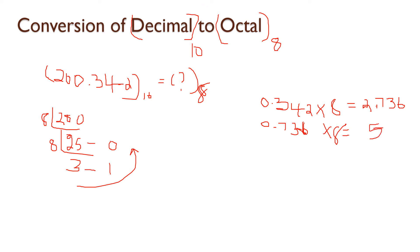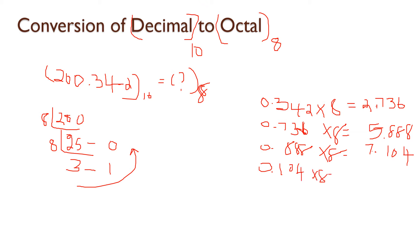Continuing: 0.736 multiplied by 8 gives 5.888, so we take 5. Then 0.888 multiplied by 8 gives 7.104, so we take 7. Then 0.104 multiplied by 8 gives 0.832, so we take 0. Then multiplied by 8 gives 2. So the fractional octal digits are 0, 2, 5, 7.